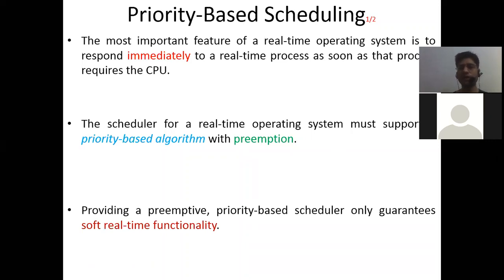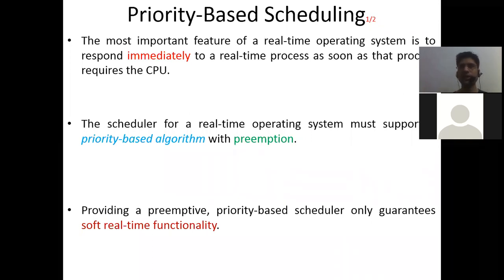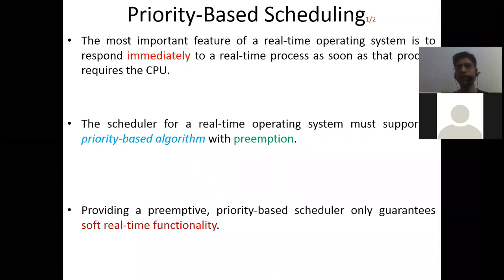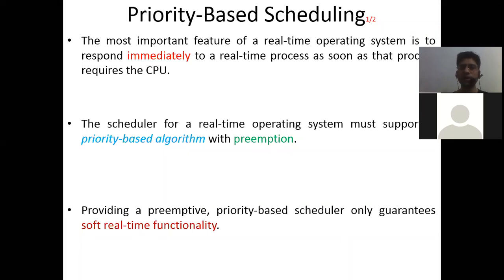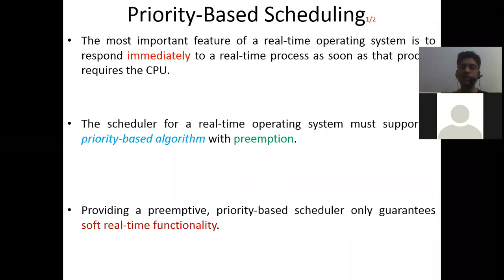Even with a preemptive priority-based algorithm, you can only achieve soft real-time functionality. Why? Because finding the priority and then preempting takes time, so you cannot guarantee strict deadlines. A preemptive priority-based scheduler guarantees only soft real-time functionality — giving preference over non-critical processes but not guaranteeing exact deadlines.